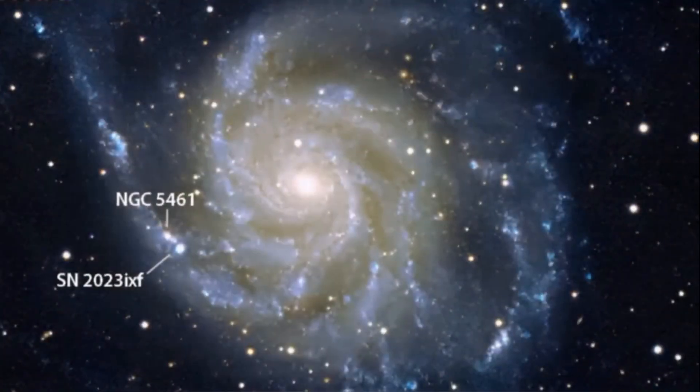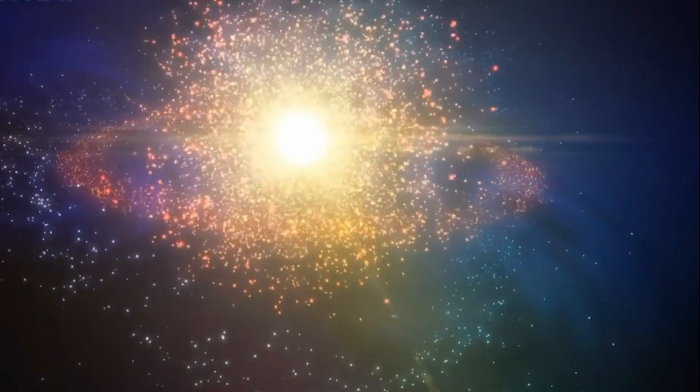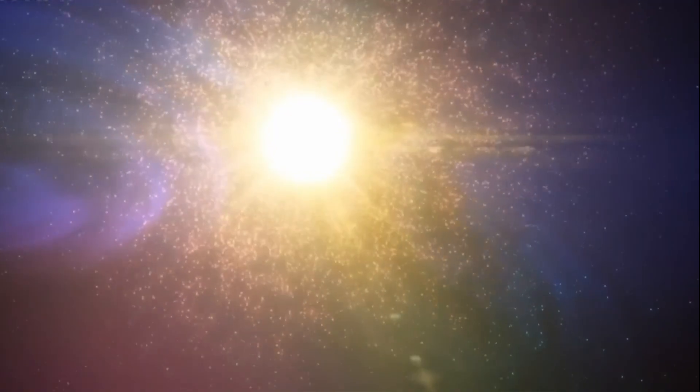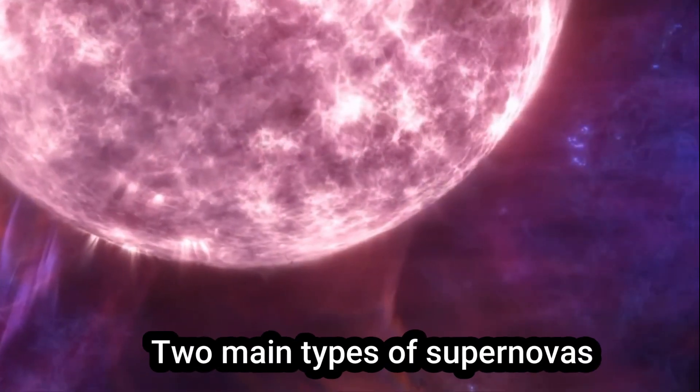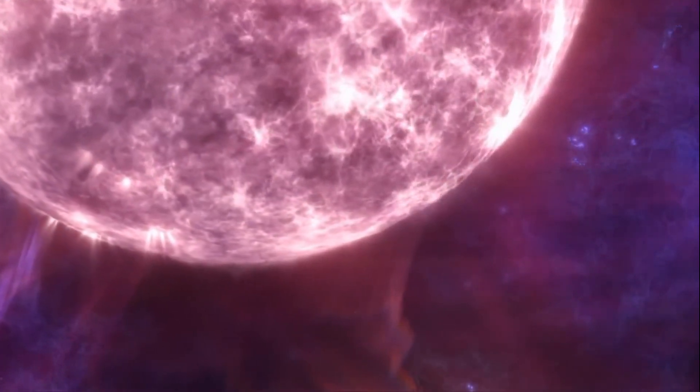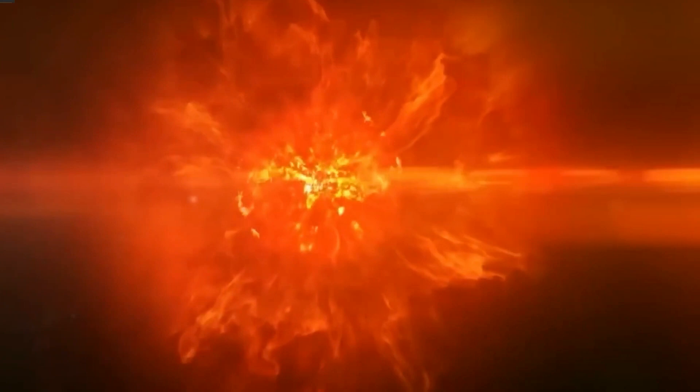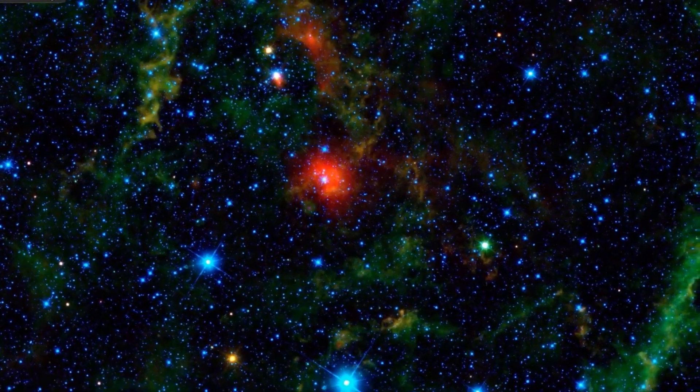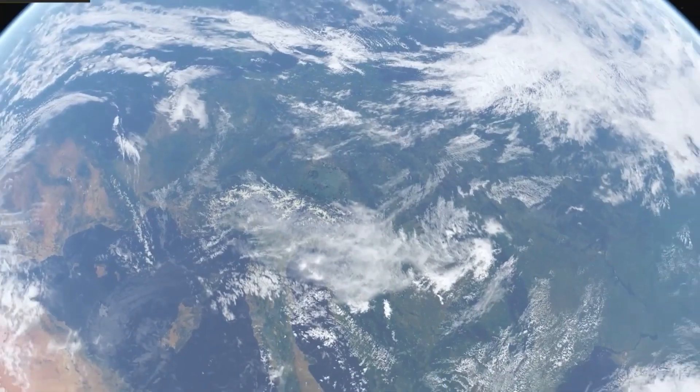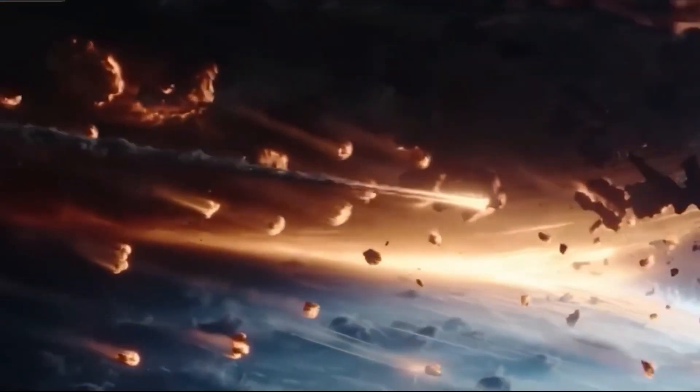Supernovas are immensely powerful explosions that occur when stars reach the end of their life cycle. They release an astonishing amount of energy, making them some of the universe's most brilliant events. There are two main types of supernovas, type 1 and type 2. A type 1 supernova happens when a low-mass star accumulates matter from a companion star until it reaches a critical mass, triggering a nuclear reaction and a powerful explosion.